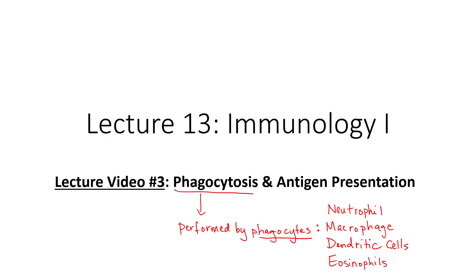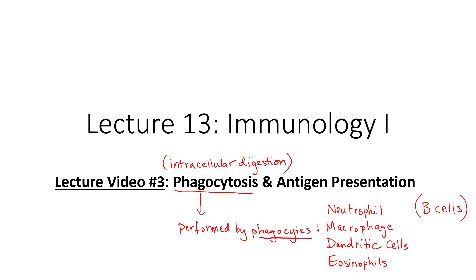Remember, eosinophils are somewhat phagocytic. They mostly function in extracellular digestion rather than intracellular digestion. Phagocytosis is a process of intracellular digestion, meaning that the pathogen is engulfed inside of the phagocyte and then digested inside of it. Those are the primary phagocytes. The other one you may not be aware of is B cells, which have a phagocytic role as well, but that's part of the third line of defense. Phagocytosis is another innate immune response — part of nonspecific immunity.